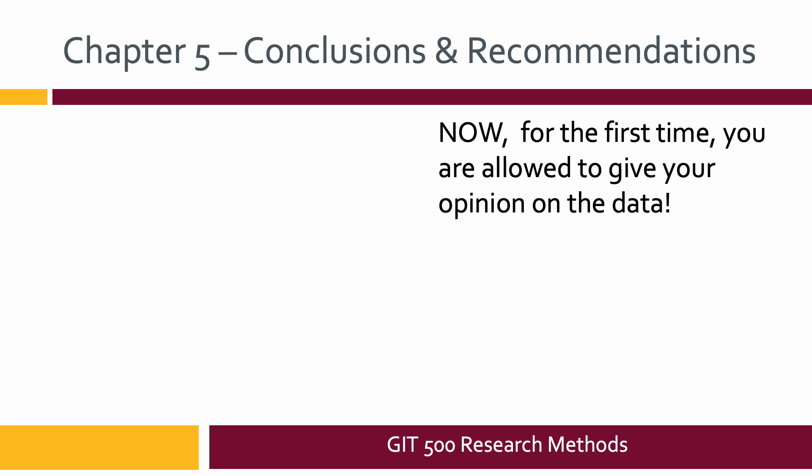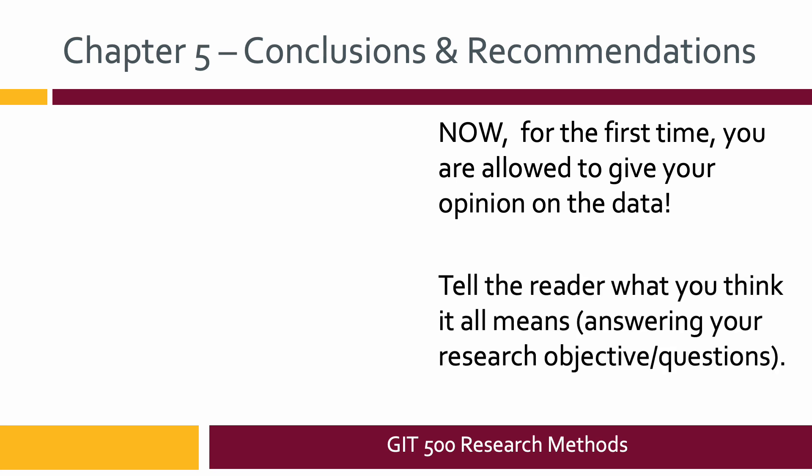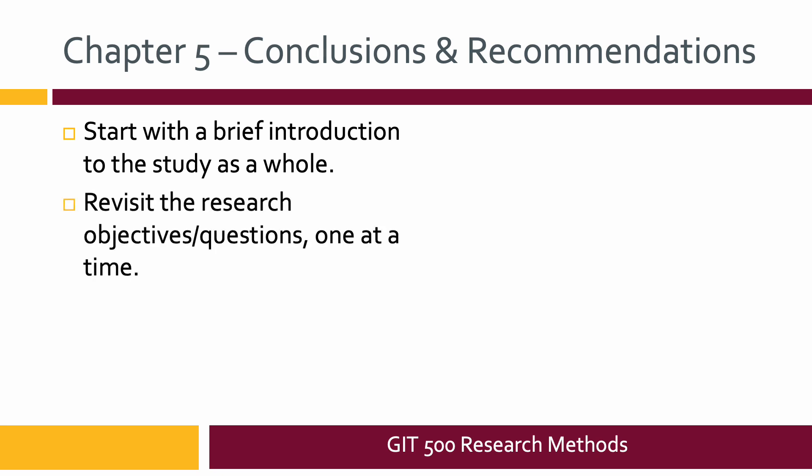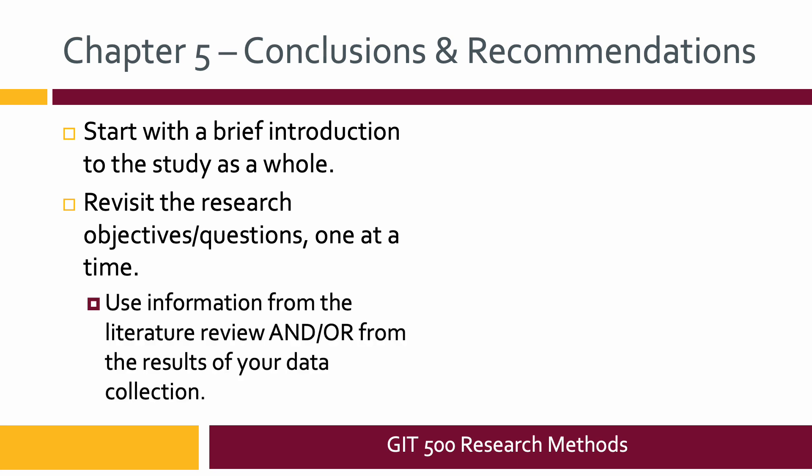Now in chapter five, the conclusions and recommendations chapter, for the first time you are allowed to give your opinion of the data. You need to tell the reader what you think it all means, and you do that by answering your research objectives or questions. Start with a brief introduction to the study as a whole — what the purpose was, what the overarching goal was — and then revisit each of the research objectives or questions one at a time. It's much easier for the reader if you address them one at a time.